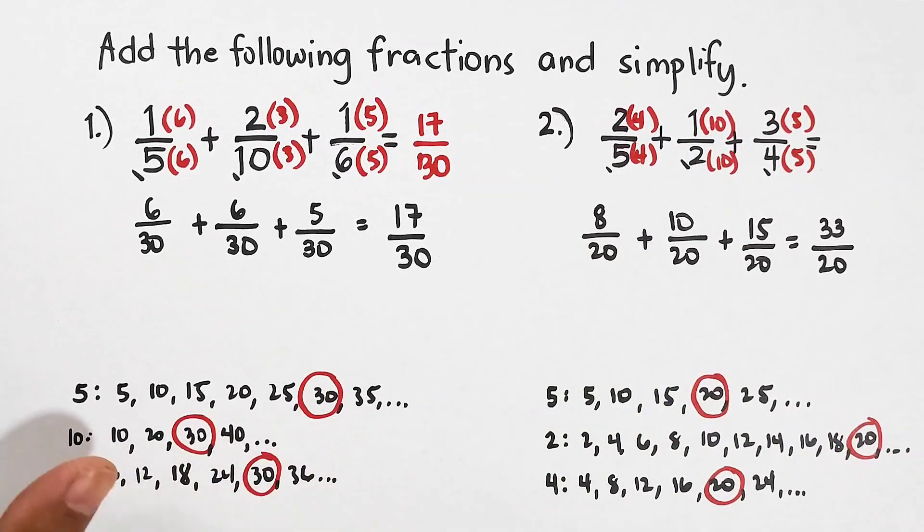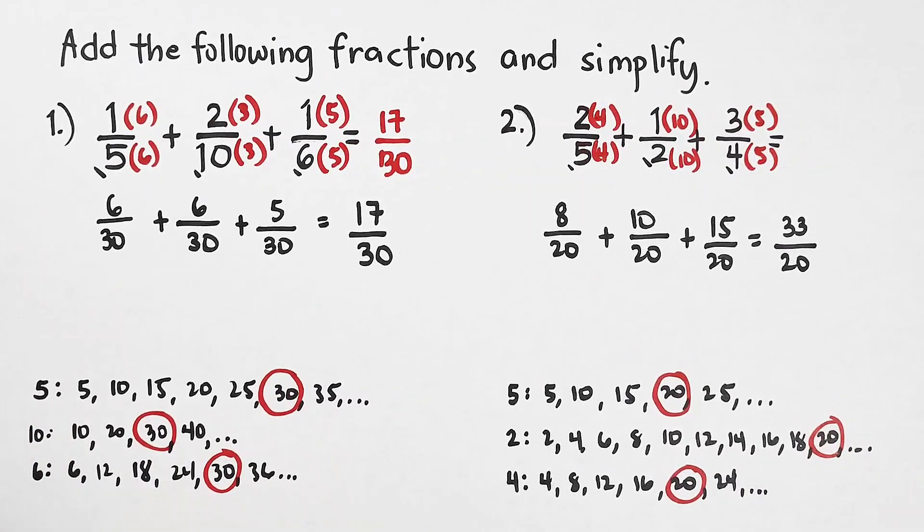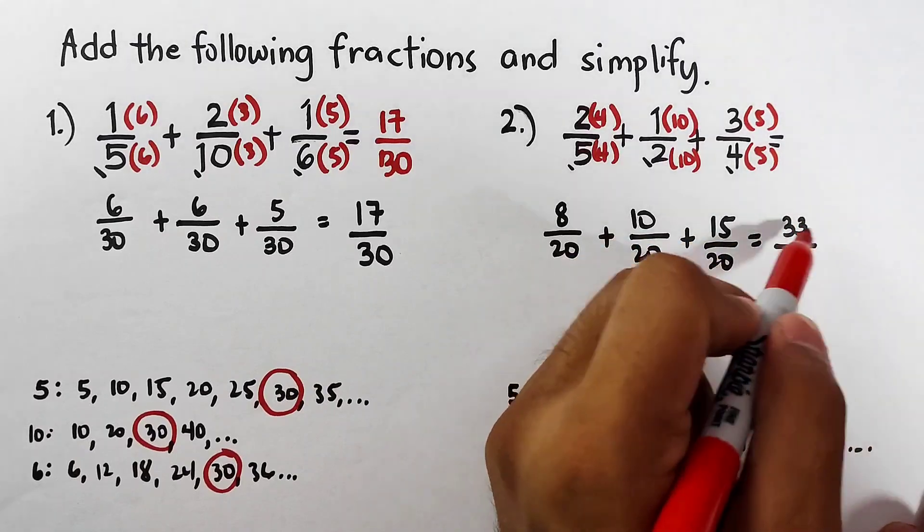8 plus 10 is 18, plus 15 is 33 over 20. Now as you can see, our answer is an improper fraction. By the way, if your teacher is asking you to convert this into a mixed number, because sometimes some teachers are not accepting improper fractions, we will express this into a mixed number.